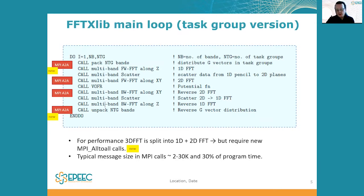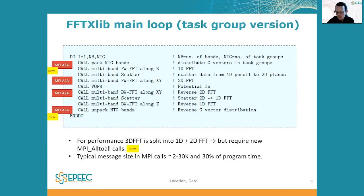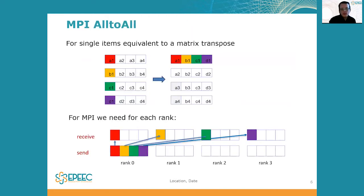For Quantum ESPRESSO, this trick introduces some complexity. In the original version there are MPI all-to-all calls, and splitting the 3D FFT adds another couple of MPI all-to-all calls. In FFTXlib, these MPI all-to-all calls represent about 30% of the total program time, with message sizes ranging from about 2K to 30K depending on the parallelization and system size.